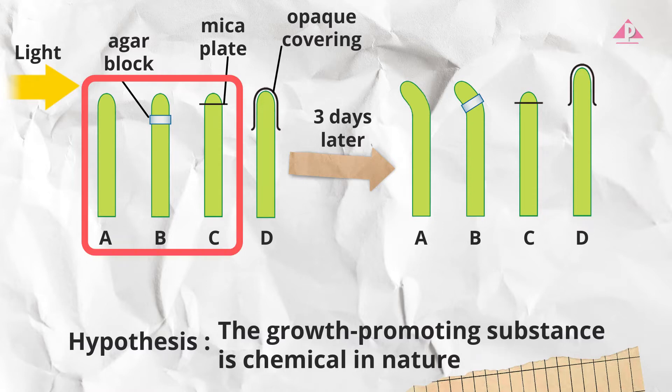Remember we should compare the results of the experimental and control setups to determine if there is evidence supporting the hypothesis. By comparing A and C we know that only A grew and bent.